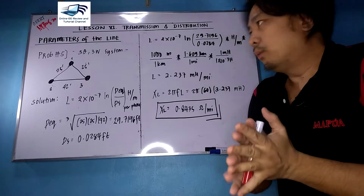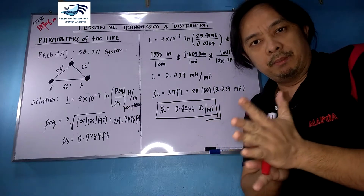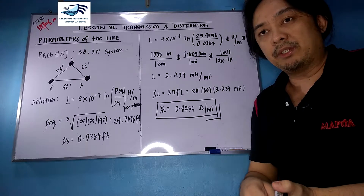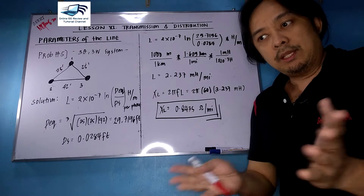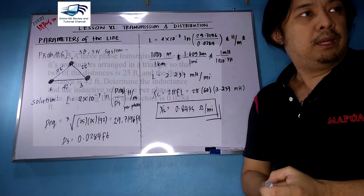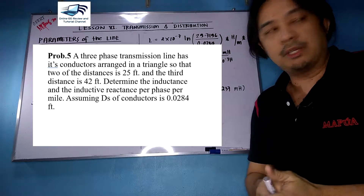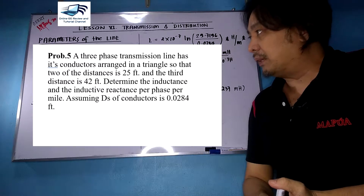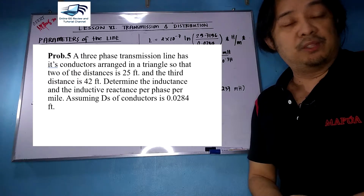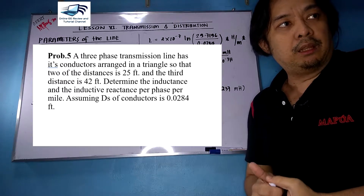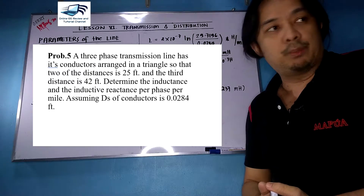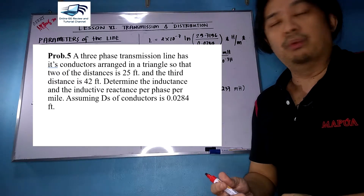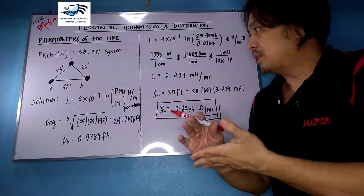We will continue with problem number five, from our Transmission and Distribution subject on parameters of the line. A three-phase transmission line has its conductors arranged in a triangle where two of the conductors have a 25-feet distance and the third distance is 42 feet. Determine the inductance and inductive reactance per phase per mile, given that the DS of the conductors is 0.0284 feet.